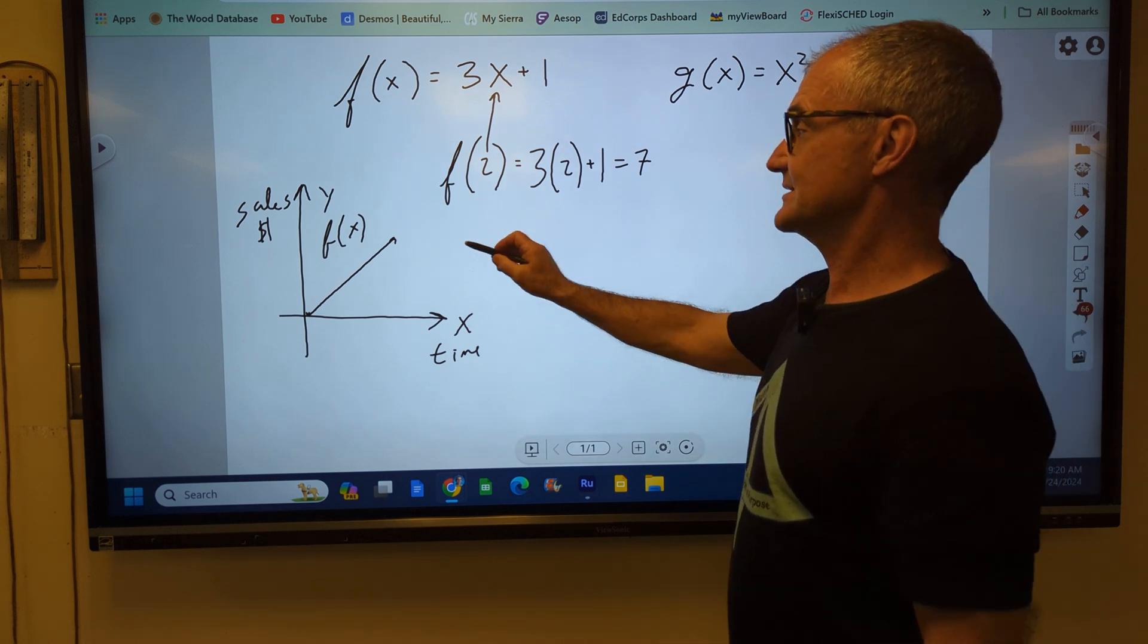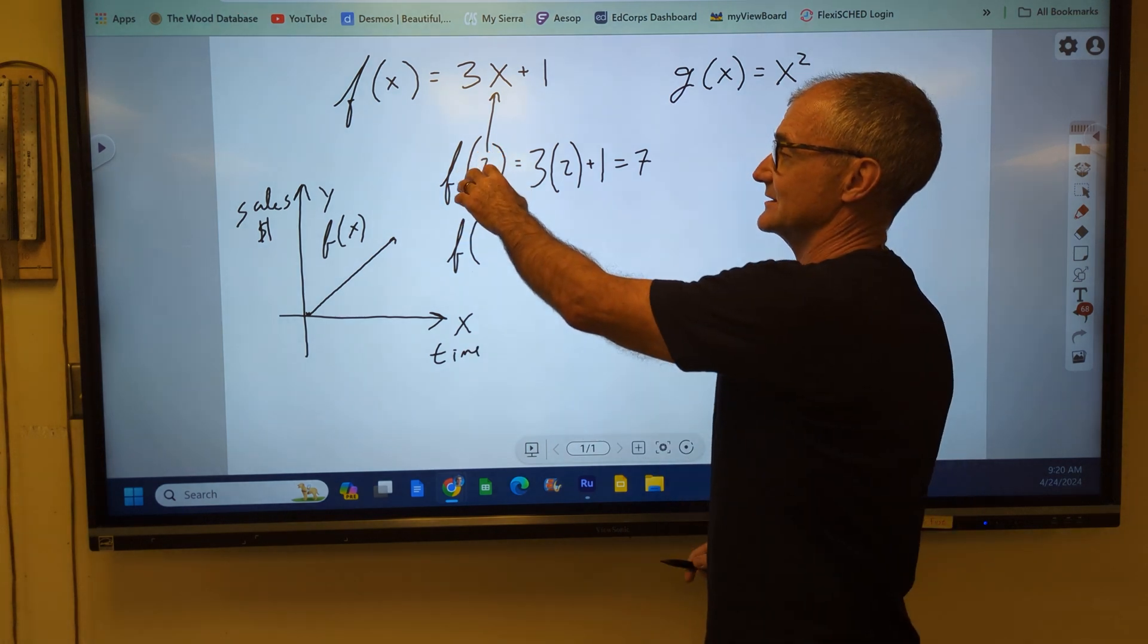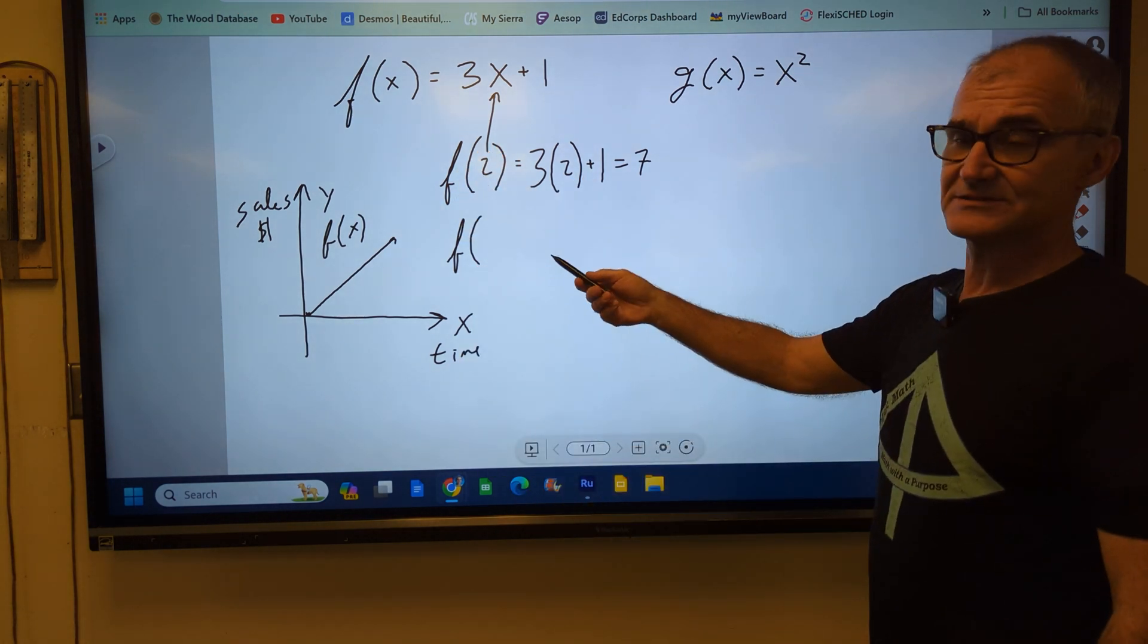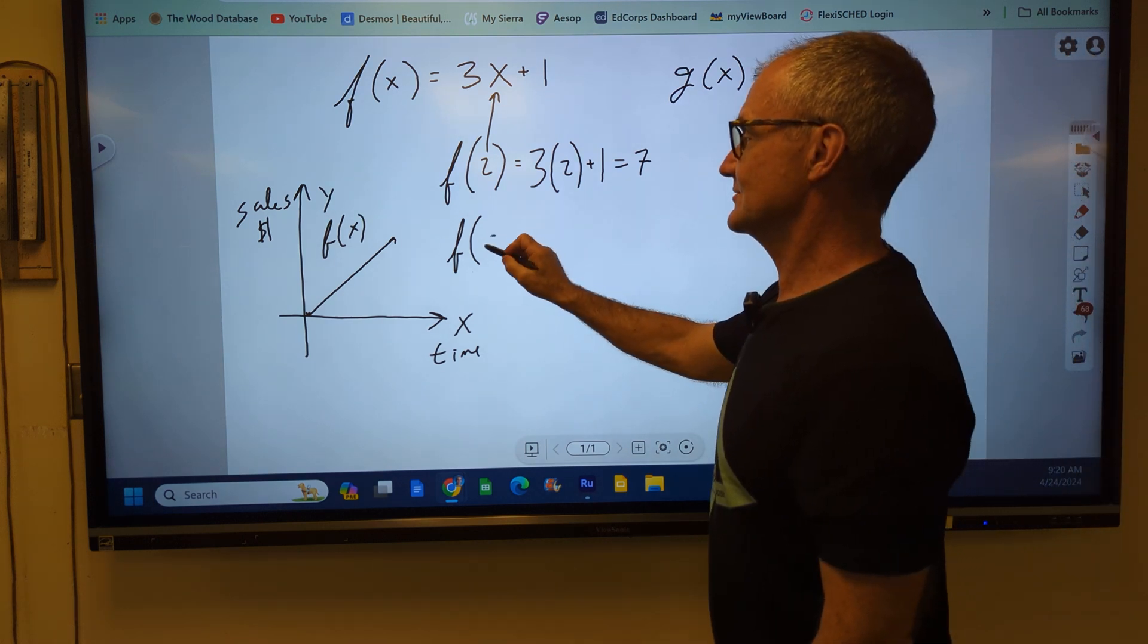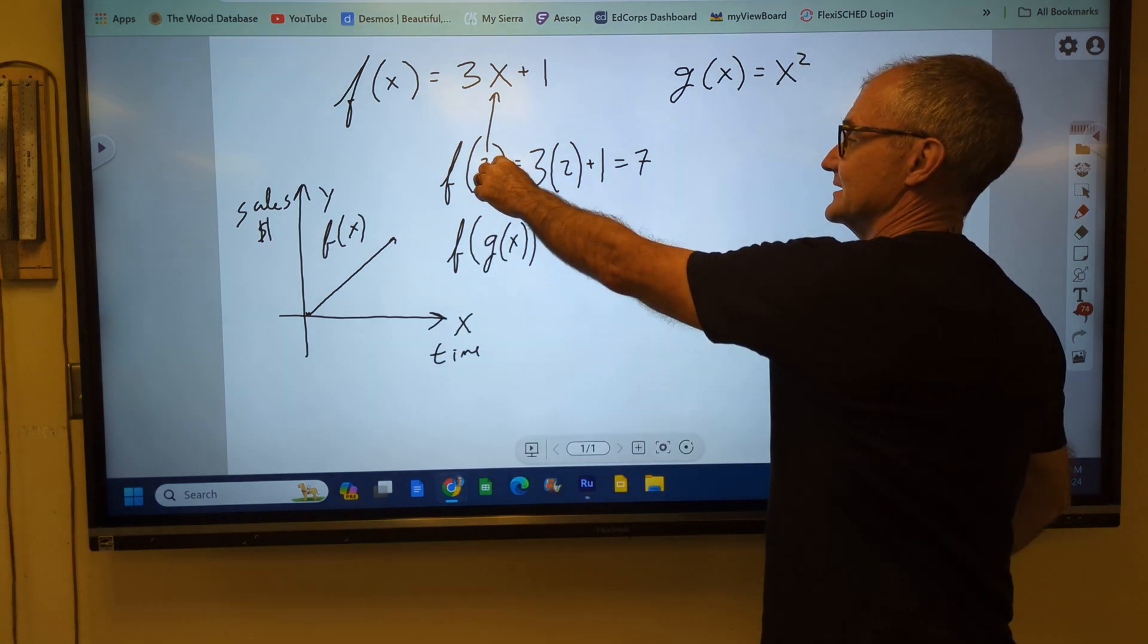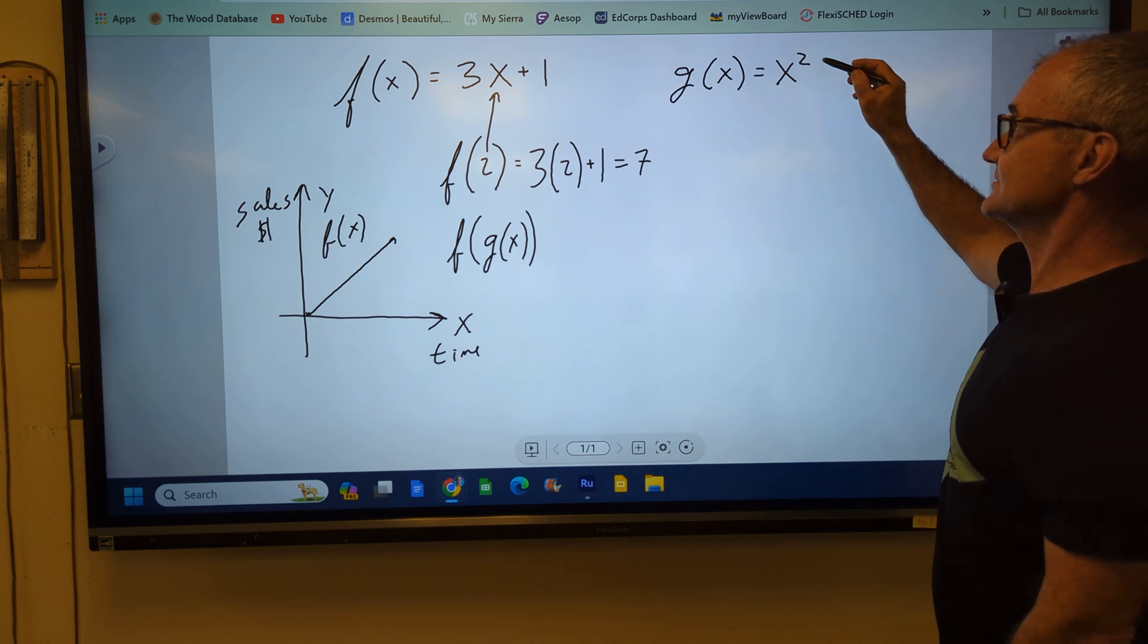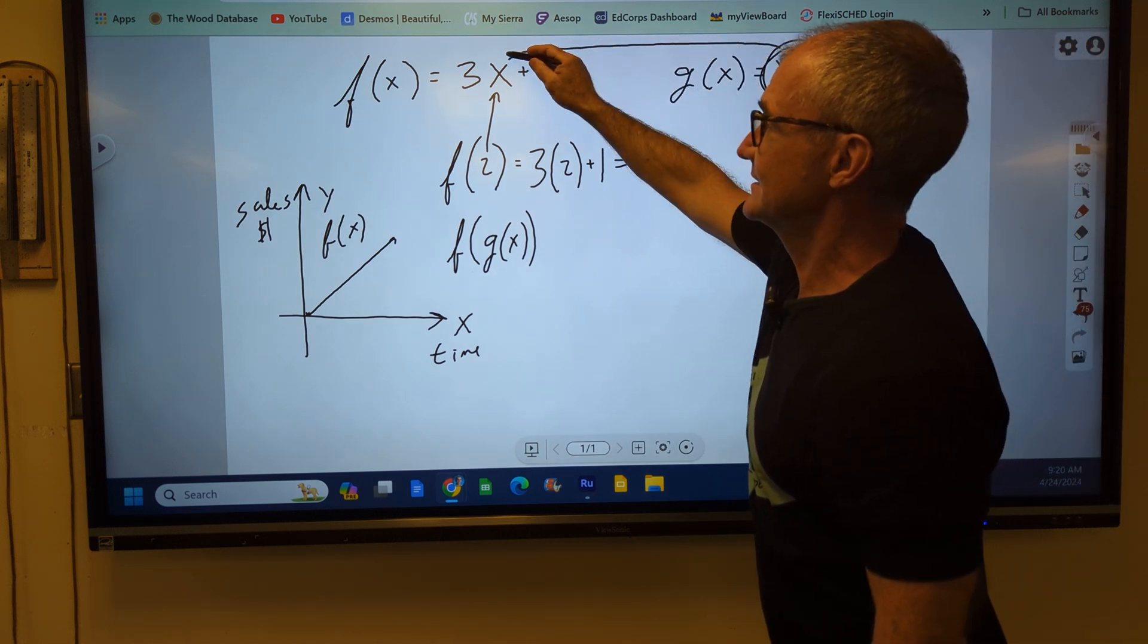I can even make it something a lot more complex, like it is actually not dependent on a number like 2. It is dependent on another function. A composite function is what we're going to create. So if I say f of x is equal to g of x, so g of x is replacing my independent variable x, it is now saying take your g of x function, whatever that is, take that function and plug that in for x now.